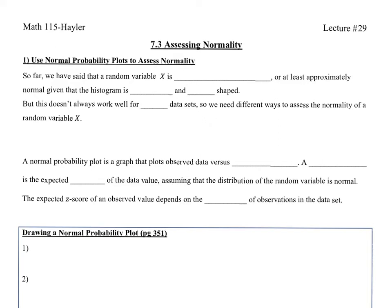Welcome to Lecture 29, Section 7.3: Assessing Normality. For the first objective, we're going to use normal probability plots to assess normality. So far, we have said that a random variable X is normally distributed or approximately normal given that the histogram is symmetric and bell-shaped, but this doesn't always work well for small data sets.